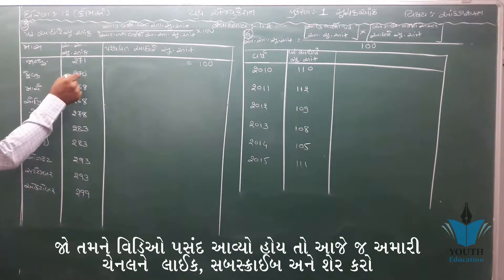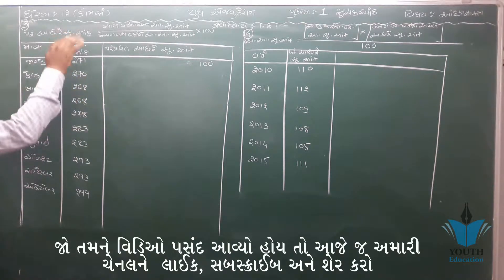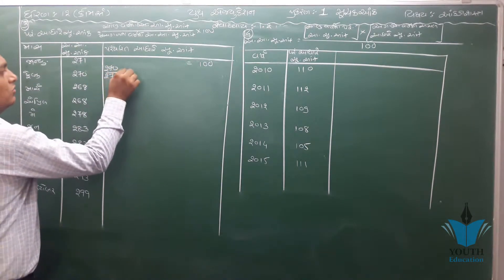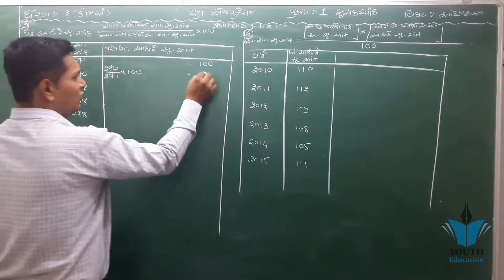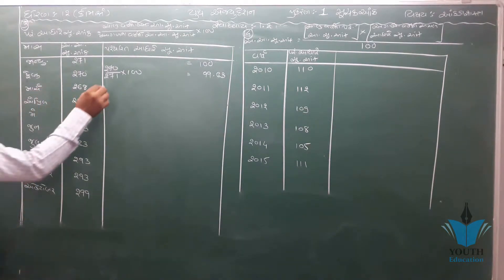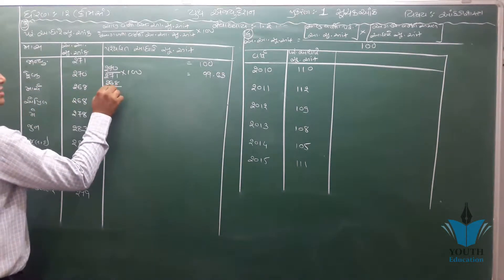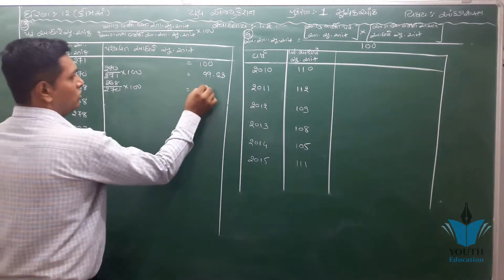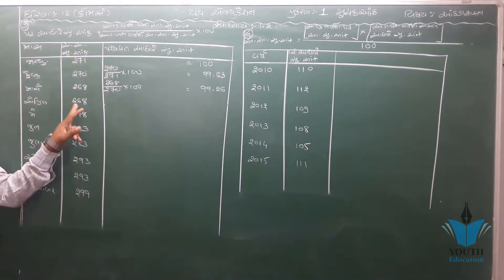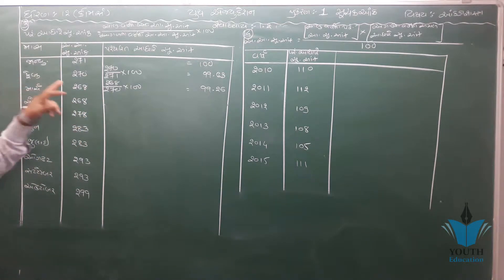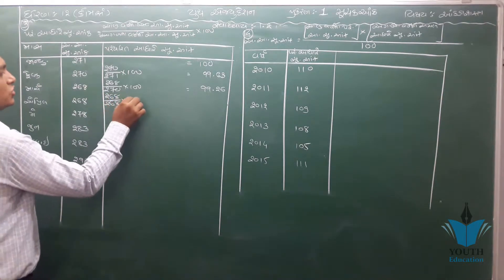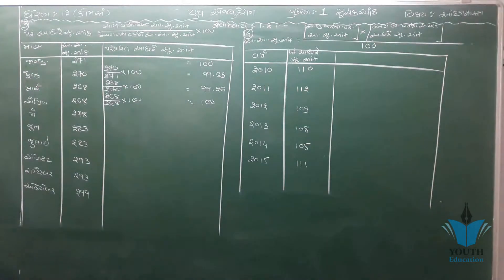ફેબ્રુઆરી માસની ગણત્રી કરો તો ચાલુ માસનો સૂચકાંક બસો ભાગ અગાઉના માસ (જાન્યુઆરી) ના સૂચકાંક સિત્તેર ગુણ્યા સો. એ જ રીતે આપણે એપ્રિલ માસની ગણત્રી કર્તા હોઈ તો...